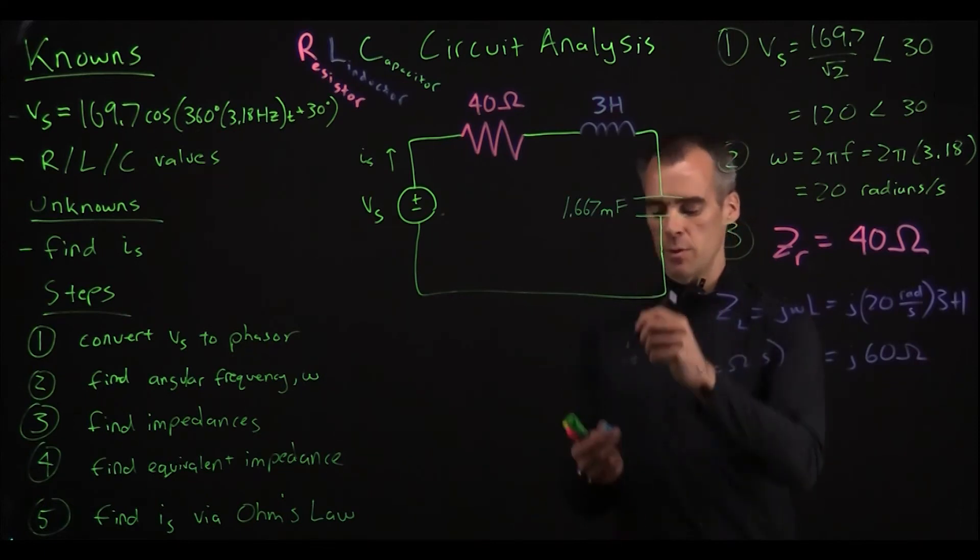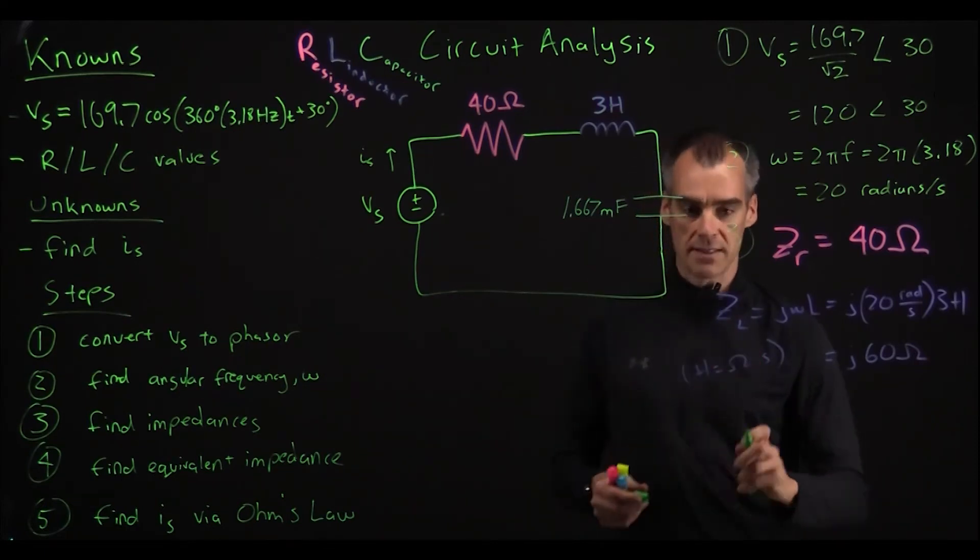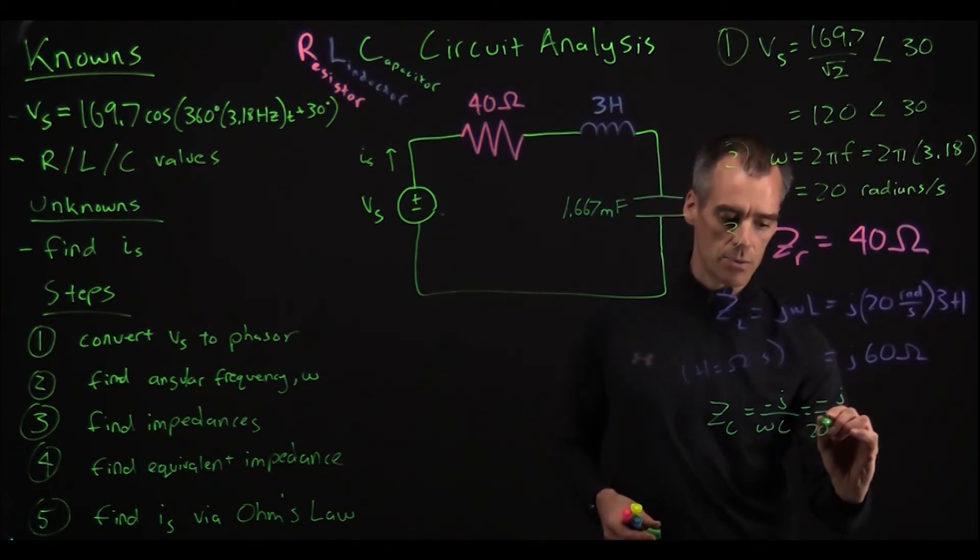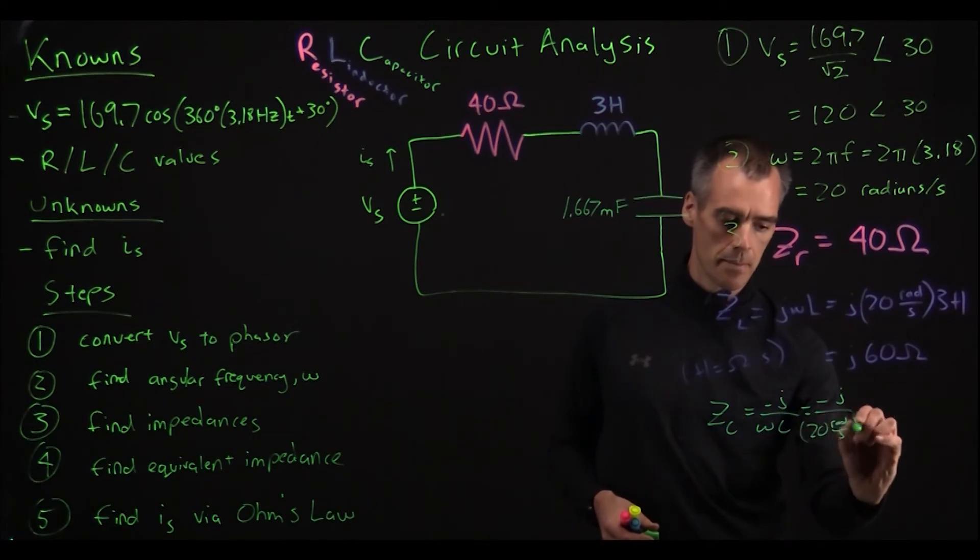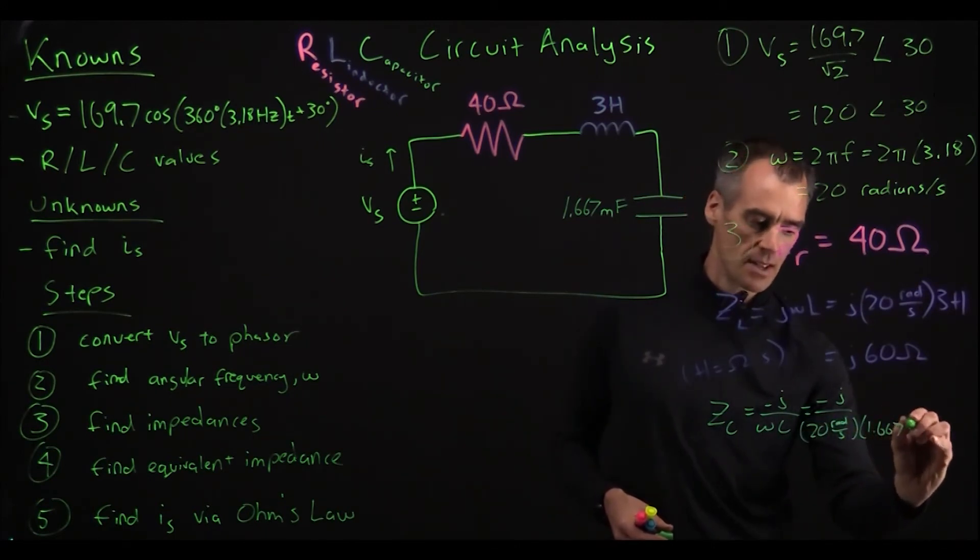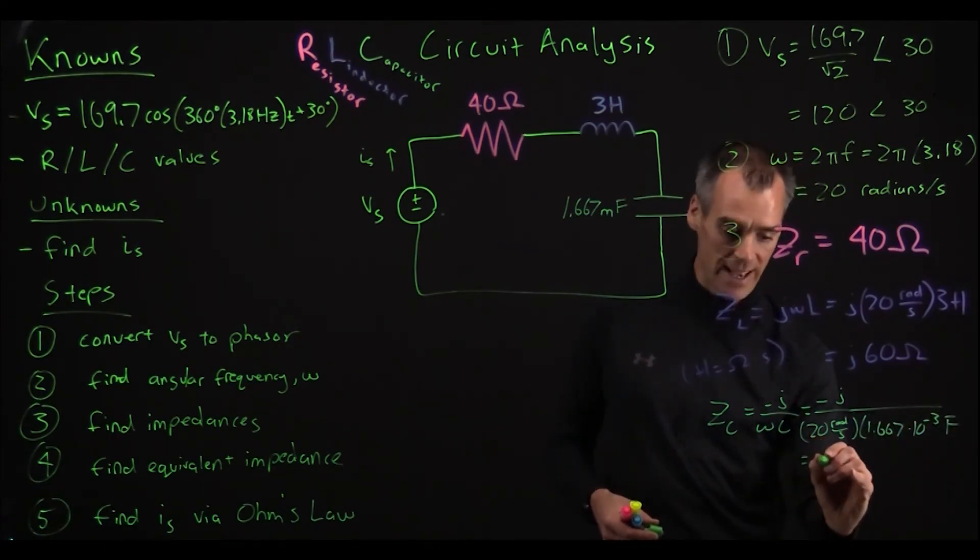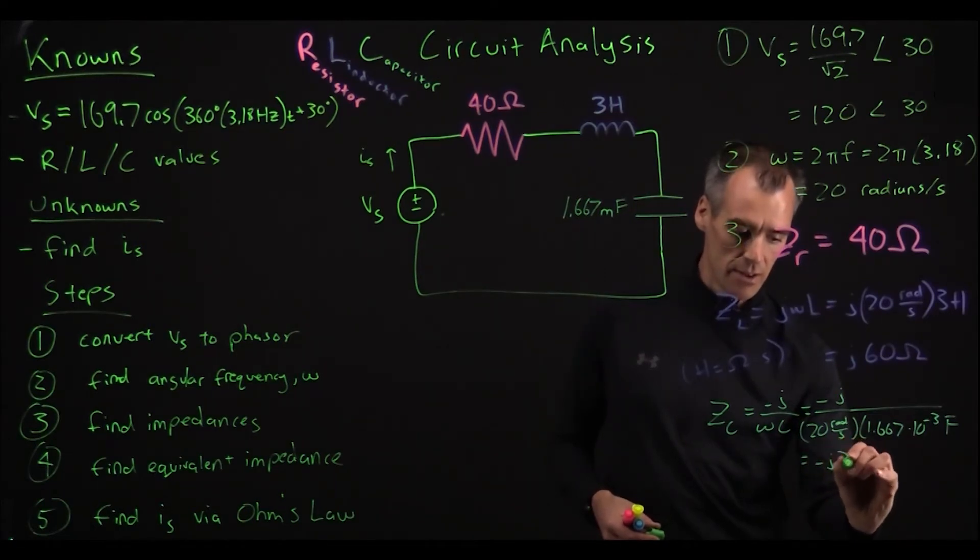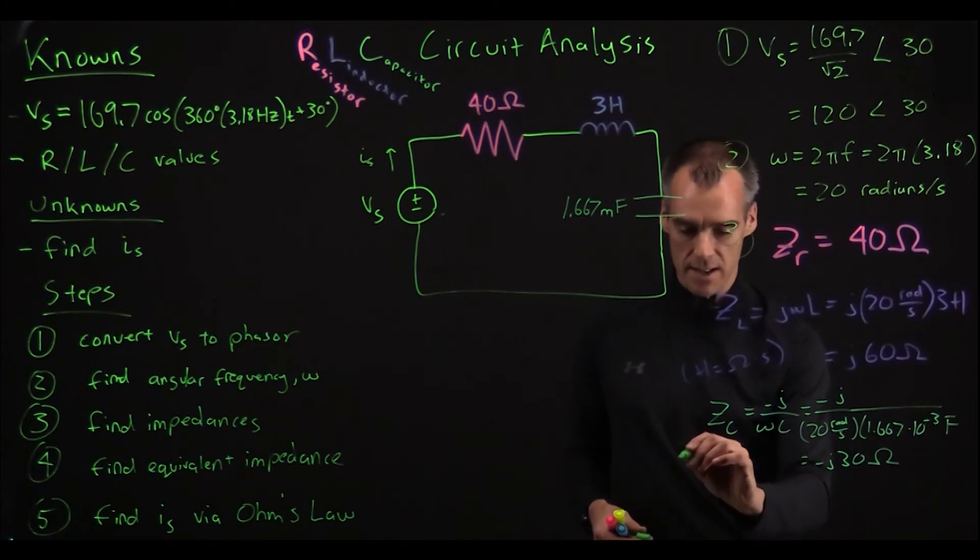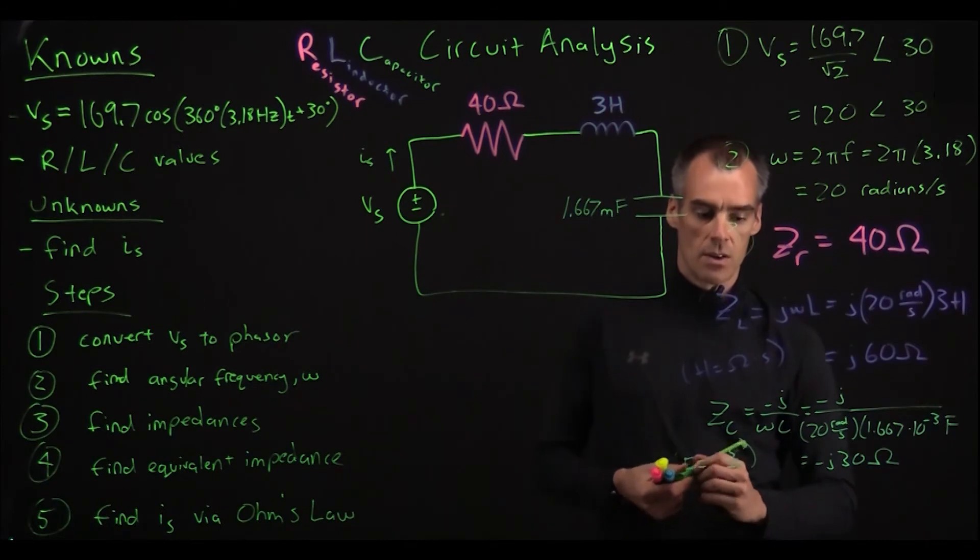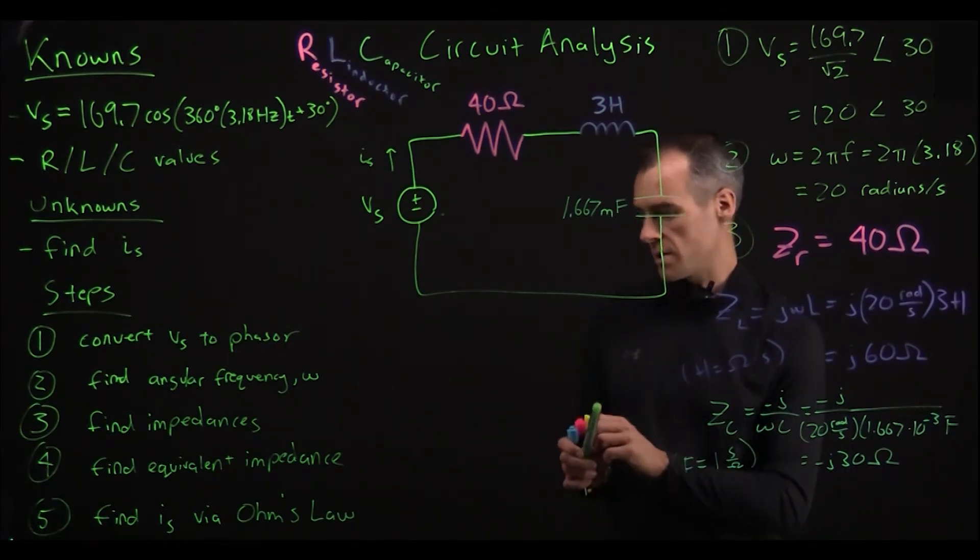And so we've got ohms here. And next we want to find the impedance of our capacitor, so we'll call that Z sub C, and that's going to be negative J over omega C, where C is our capacitance, so that's negative J over 20 radians per second, times our capacitance is 1.667 times 10 to the negative 3 farads. So cranking through the math on that, we get negative J 30 ohms, and we know that because as far as units go, 1 farad is going to be equal to 1 second per ohm, so the units work out. So we've checked off 3, let's go ahead and check these off.